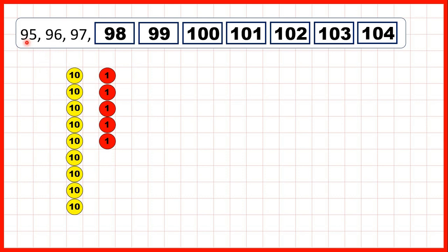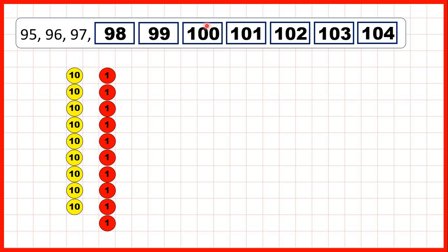We can also show counting using place value counters. So first, we started with 95 — that's 9 tens and 5 ones. Then we continued adding 1s. So here we have 9 tens and 9 ones, so 99. But you can see, if we have 1 more 1, we get 100. Because we can't have more than 9 in any place value, so we can't have 10 ones.